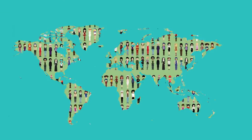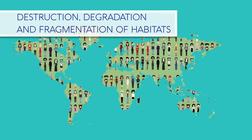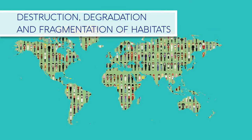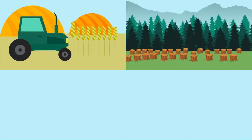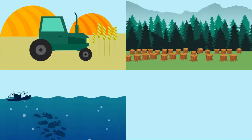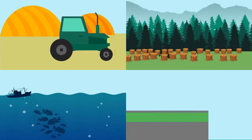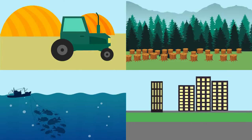As the world population has grown from 1.5 billion in 1900 to nearly 7.5 billion people today, unsurprisingly the land use has changed. Habitats have been destroyed in favour of agriculture, forestry, fishing, urbanisation and manufacturing.